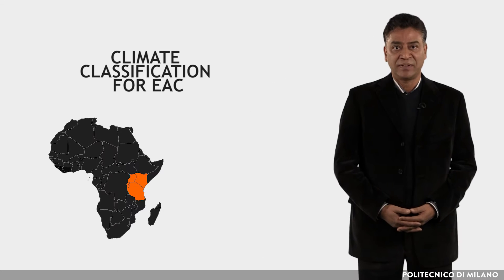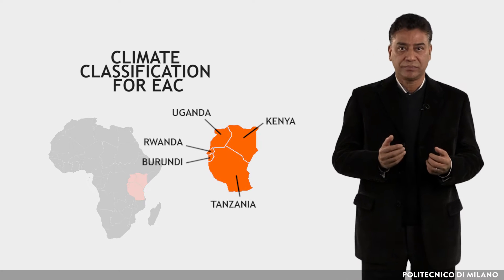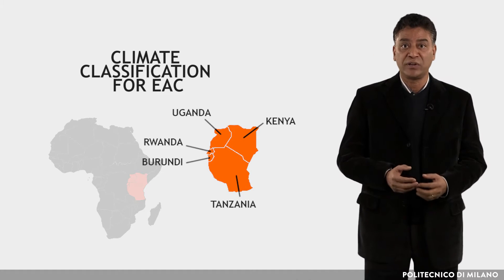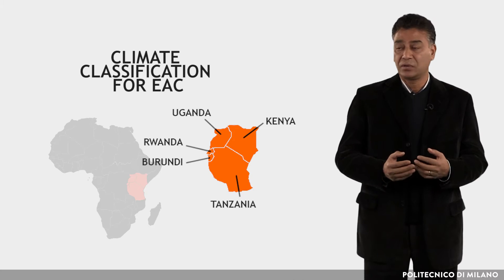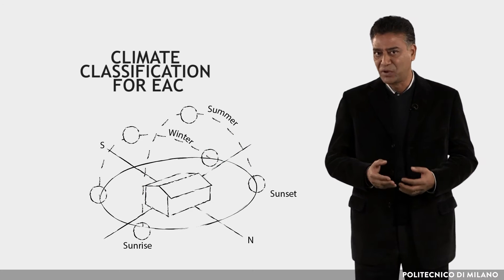For vegetation, precipitation has to be added. But buildings and vegetation react differently to the same climatic input. The climate classification for EAC, which includes 5 countries, developed in this project is based on buildings' response to climate, not on vegetation response.